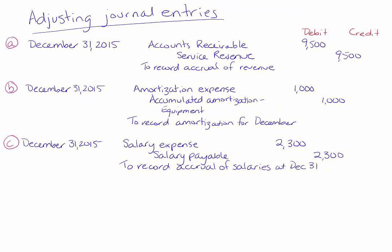Let's look at our adjustments. At December 31st we have three adjusting journal entries we need to put into our trial balance. I've labeled the journal entries A, B, and C so we can use those references on our trial balance to keep track of them. A is accruing revenue at year end — revenue that has been earned but we haven't received the cash for yet or we haven't billed yet. B is amortization of equipment, and C is accrual of salaries expense.